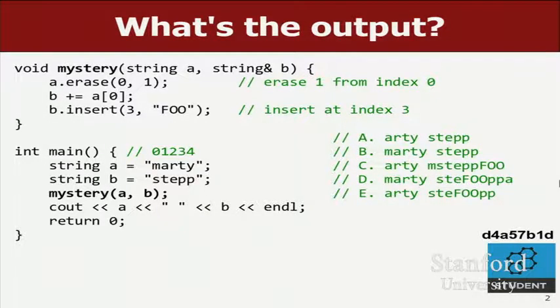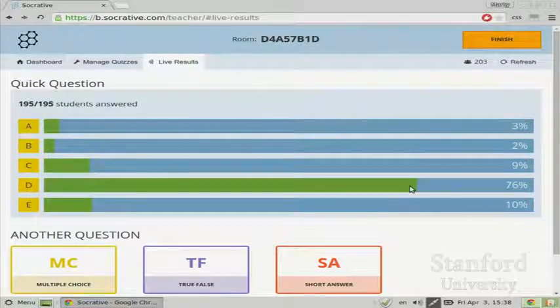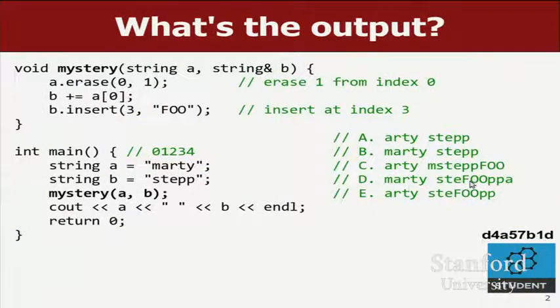Let's take a look. Wow, okay. Lots of you think the answer is D, which is Marty Steffupa. So some of the answers have arty and some of them have marty. How do you know that it's marty and not arty? That would be the deleting of the M here, right? How do you know the M stays? It's not passed by reference, it's passed by values, so even though I changed it, it made a copy of the string when I passed it, so it doesn't affect back in the main function, right? So the M does not stay deleted, even though I deleted it up here. And then this one's by reference, so adding the last character of A onto the end of step gives me steppa, but then I insert at three, I insert a foo, so I get stefupa. So yeah, I think D is the right answer.